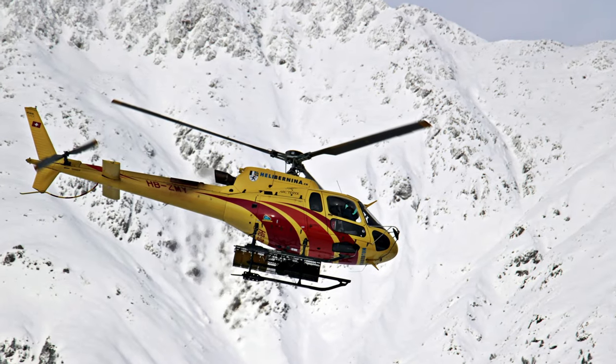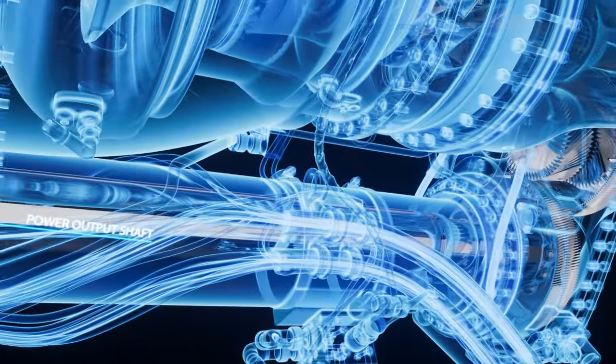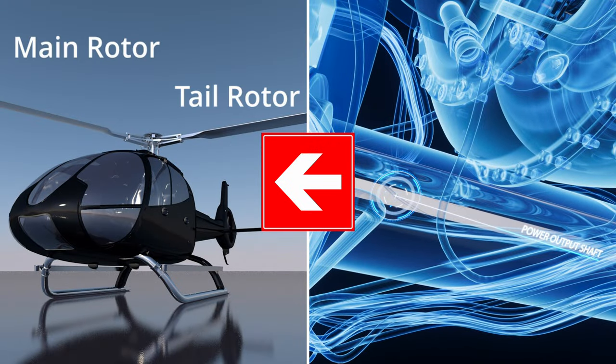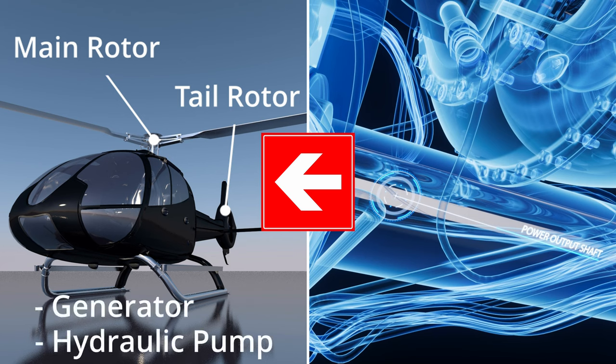In a helicopter, the turboshaft engine is used to produce the power needed to drive the main and tail rotor and for the power supply of additional devices, such as the generator and the hydraulic pump.